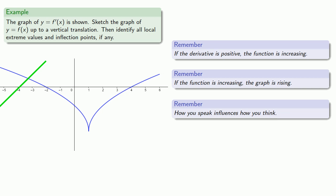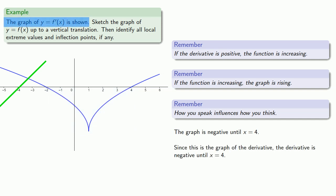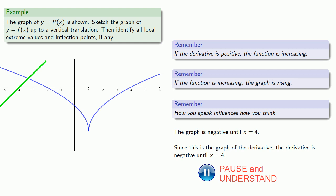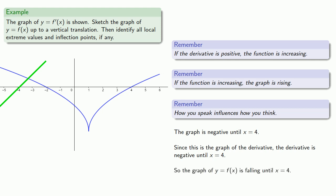We see that the graph is negative until x equals 4. Since this is a graph of the derivative, that means the derivative is negative until x equals 4. So when we go to the graph of y equals f of x, derivative negative means the graph is falling until x equals 4. Let's draw a reference line through x equals 4 and continue our graph dropping until we hit the line.